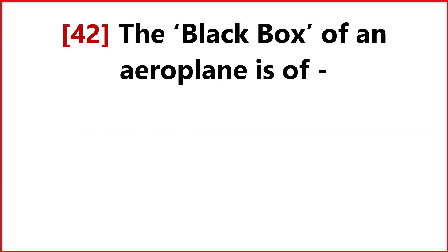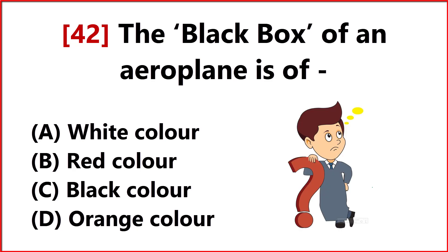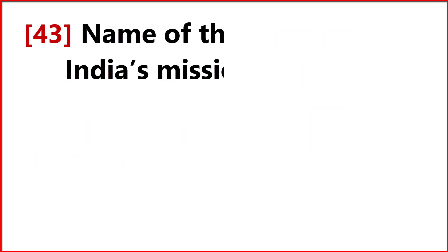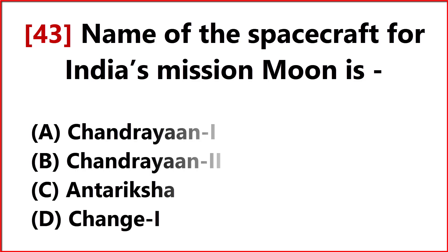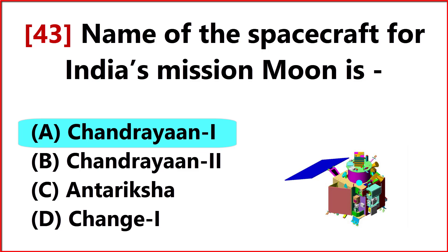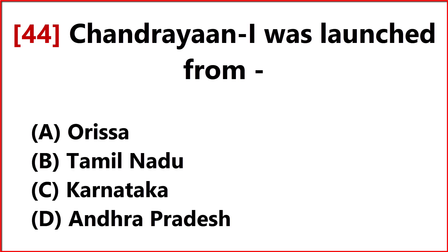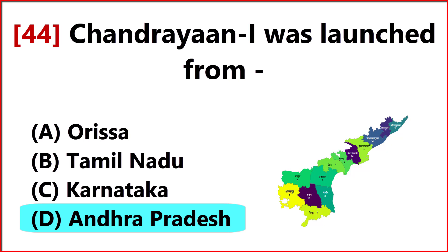The black box of an aeroplane is of Answer Option D: orange color. The name of the spacecraft for India's mission to the moon is Answer Option A: Chandrayaan-1. Chandrayaan-1 was launched from Answer Option D: Andhra Pradesh.